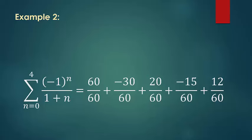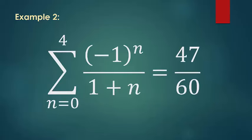When I put these in terms of a common denominator and add them up, I get that the summation from n equals 0 to 4 of negative 1 to the nth power, divided by 1 plus n, is equal to 47 divided by 60. And that's about all you need to know to be able to calculate summations.